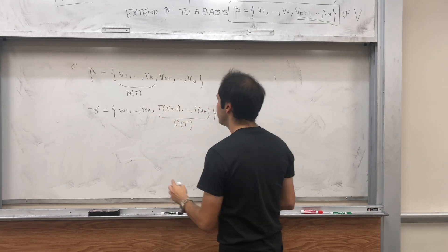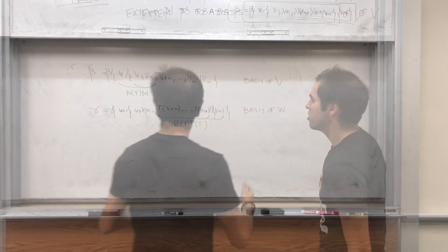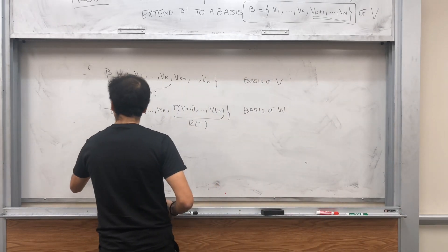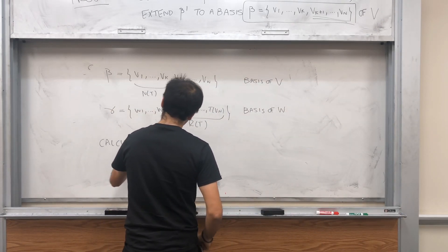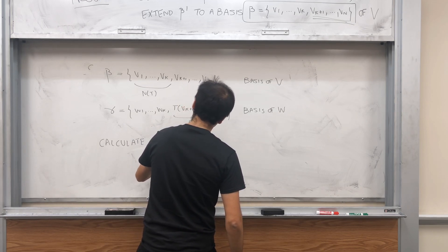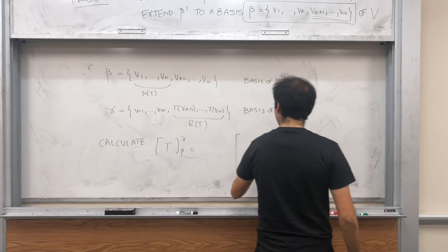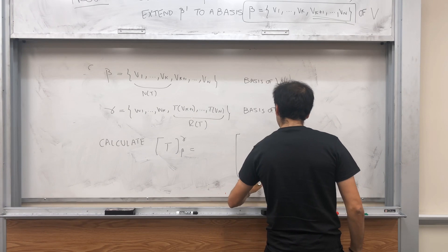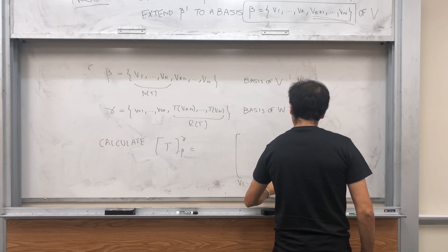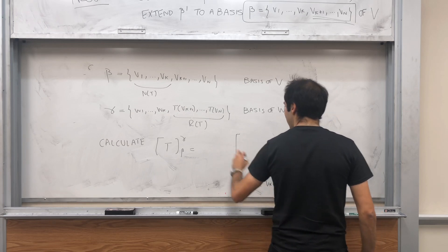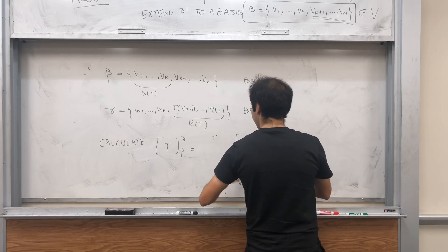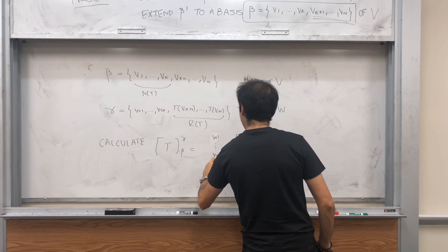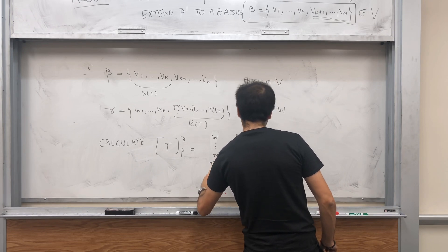We have gamma, which starts with arbitrary vectors and ends with the range T of vn. And again, those are all bases. So I've shown, in fact, that all that's left to do is just calculate the matrix of the linear transformation. So calculate T from beta to gamma. And how do you do that? Well, you just calculate T at every basis vector, so v1 up to vk, vk plus 1 up to vn. And you express this in terms of your output basis, which is here, w1 up to wk, tvk plus 1, and then tvn.